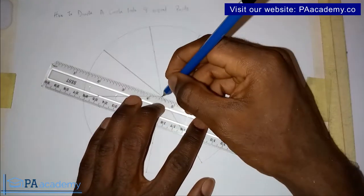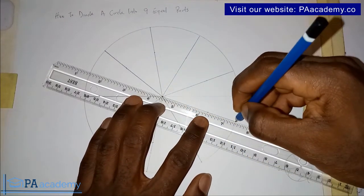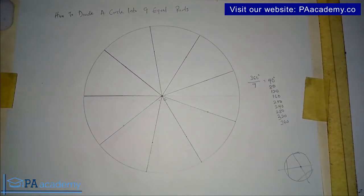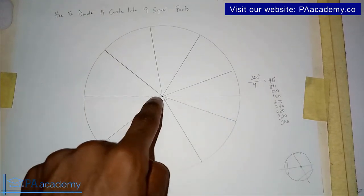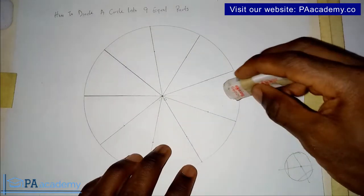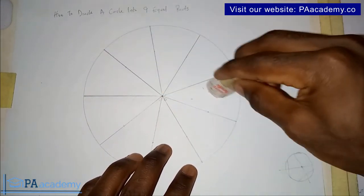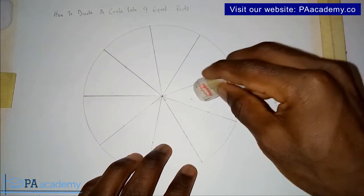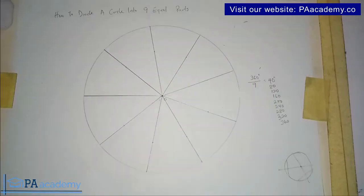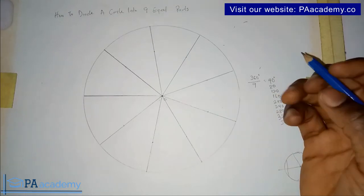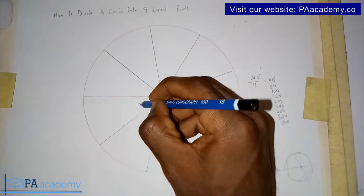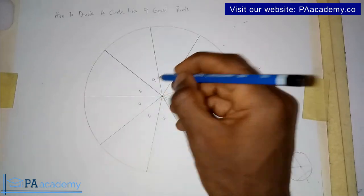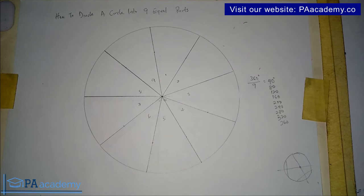For the last one, draw it in the same way. With this, we've been able to divide the circle into nine parts. If you extended the radius to form a diameter with a thin construction line, go ahead and erase it so it doesn't cause confusion. Our circle is now divided into nine equal parts — one, two, three, four, five, six, seven, eight, nine.